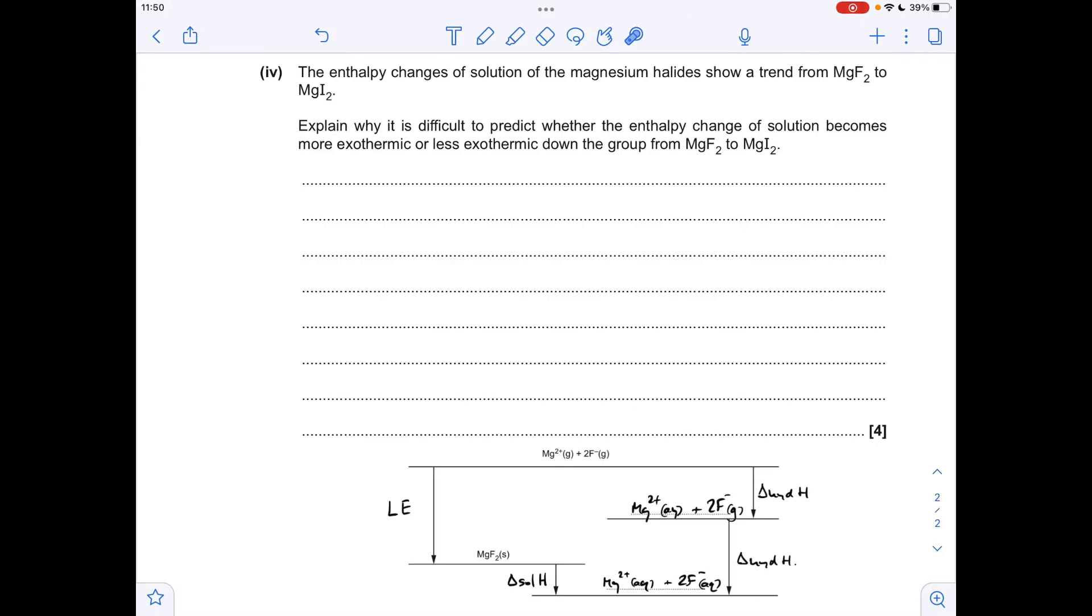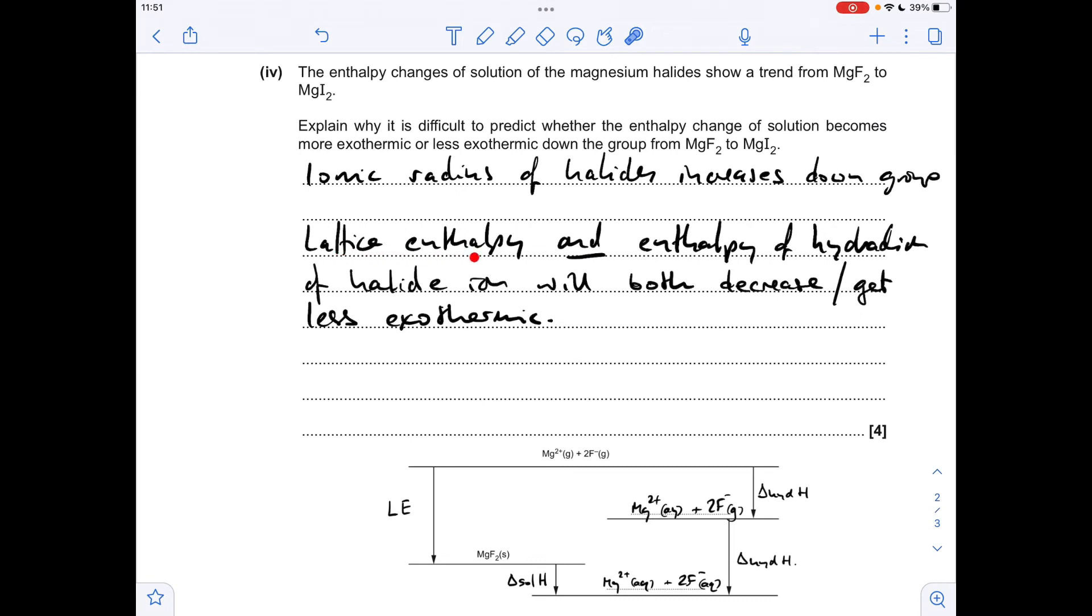So we've got to think about how that will be affected by changing the halide. We'll start off by saying the ionic radius of the halides will increase going down the group. So what's the effect of that? Well, the lattice enthalpy and the enthalpy change of hydration of the halide ion, they'll both decrease or get less exothermic as that ion gets bigger.